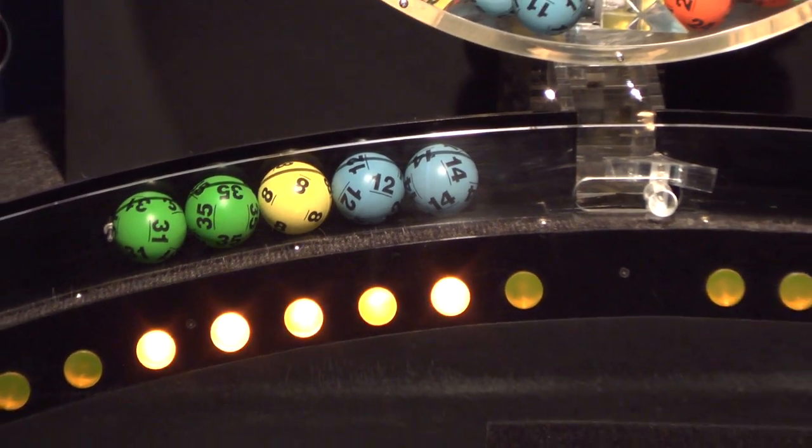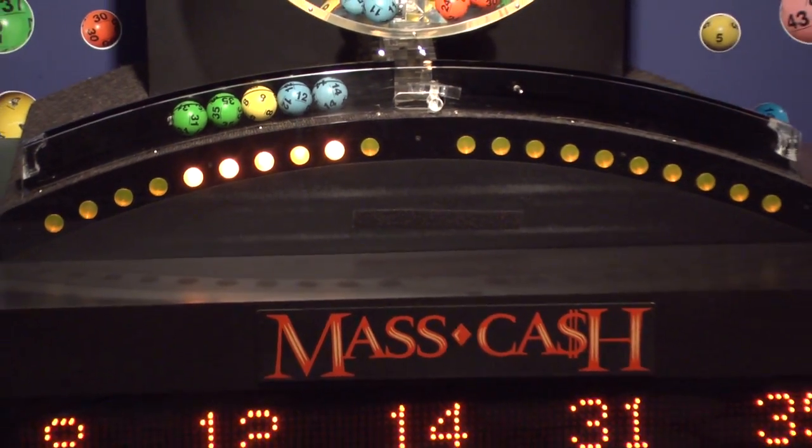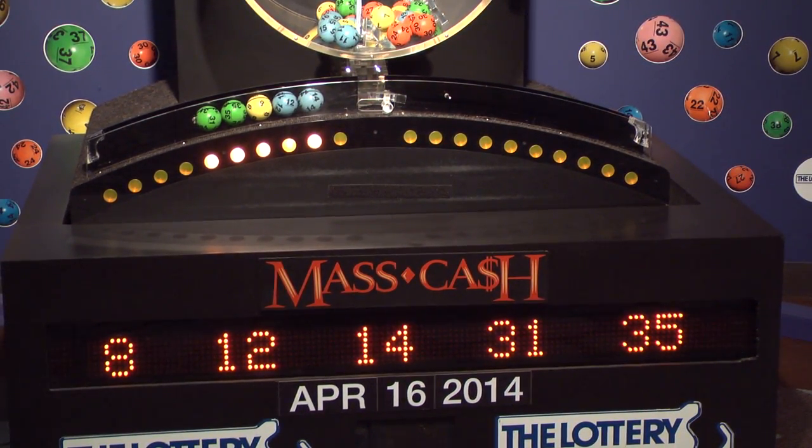Once again, the winning Mass Cash numbers for Wednesday, April 16, are 8, 12, 14, 31, and 35.